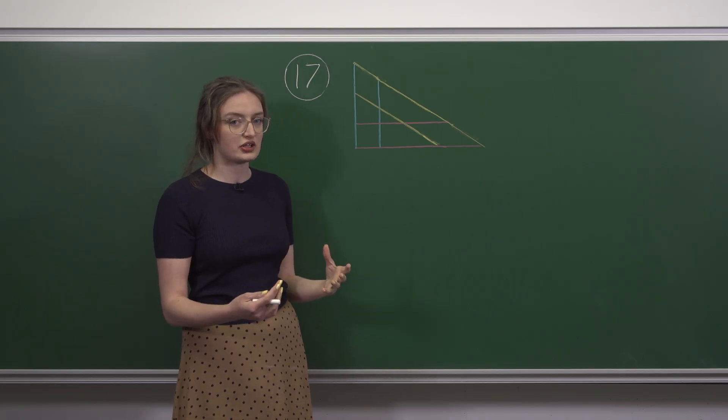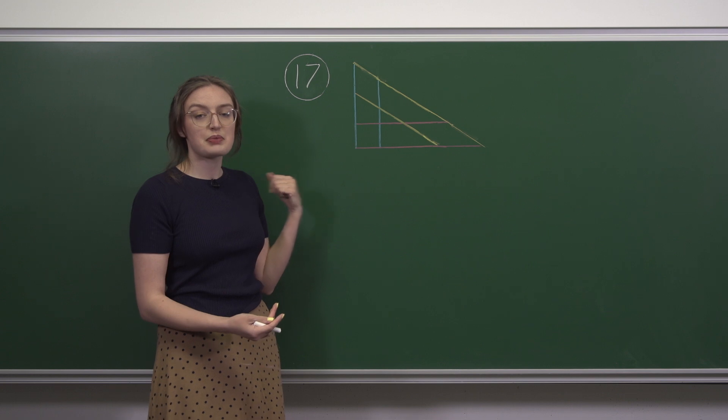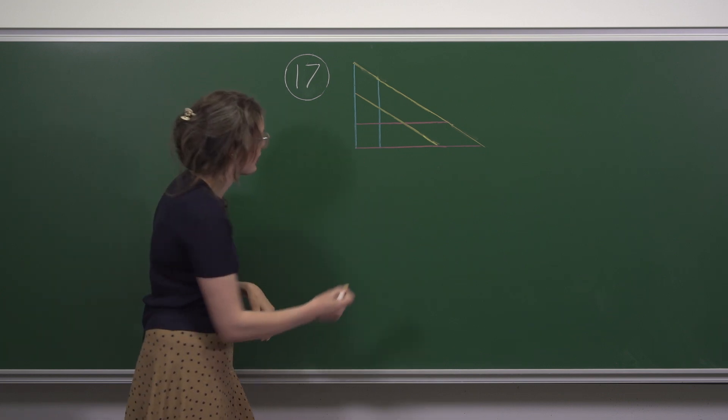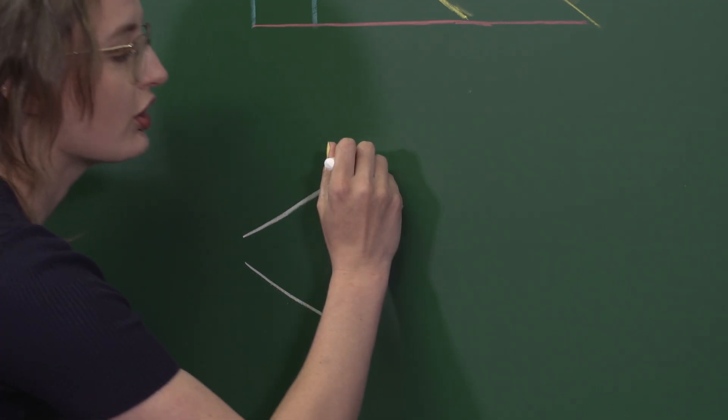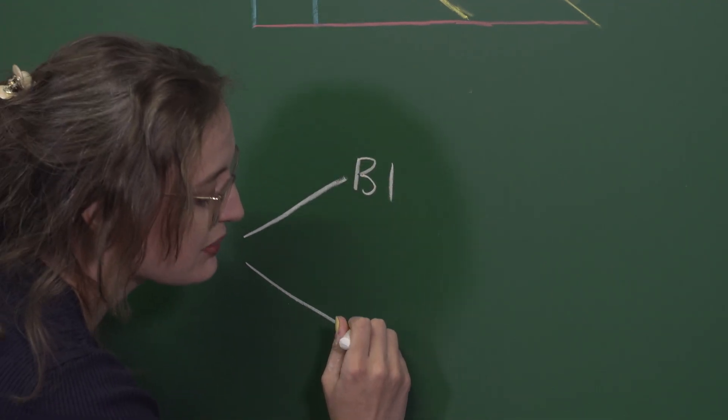So let's look at how those options play out. Let's say we pick a blue line first. We have two options for which blue line to pick. We'll call them B1 and B2.